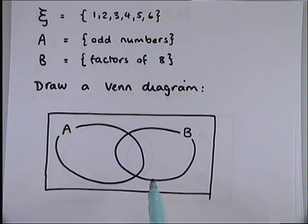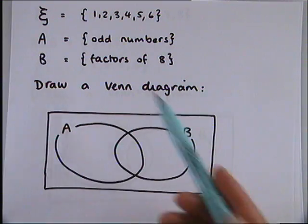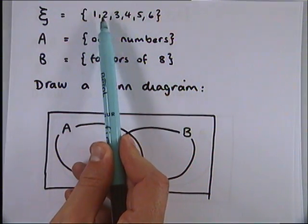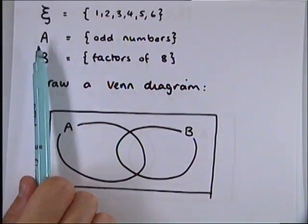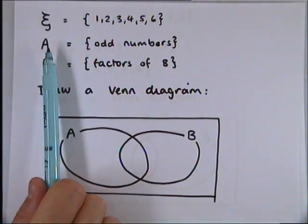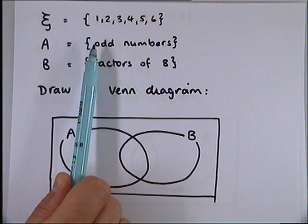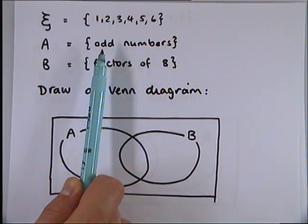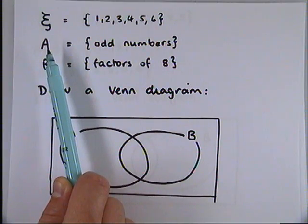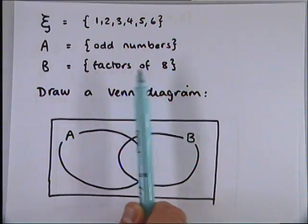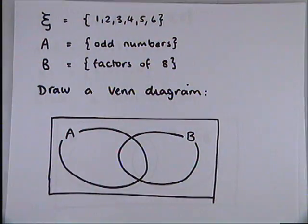So somewhere in my Venn diagram I have to put all of the numbers 1, 2, 3, 4, 5 and 6. But I don't know where they go yet. In order to find out where they go, I have to look at this notation here. The curly brackets tell me that all my odd numbers need to go in circle A and all of my factors of 8 need to go in circle B.